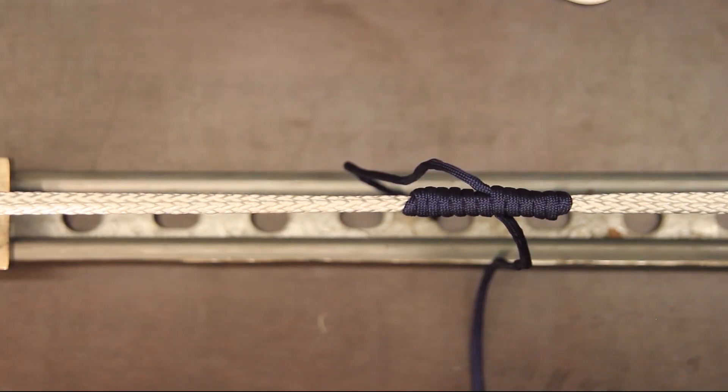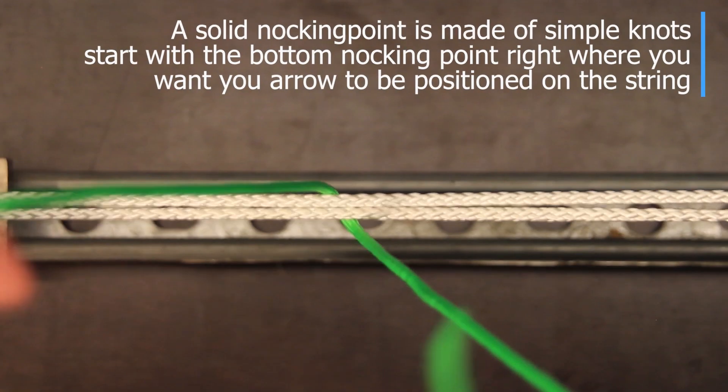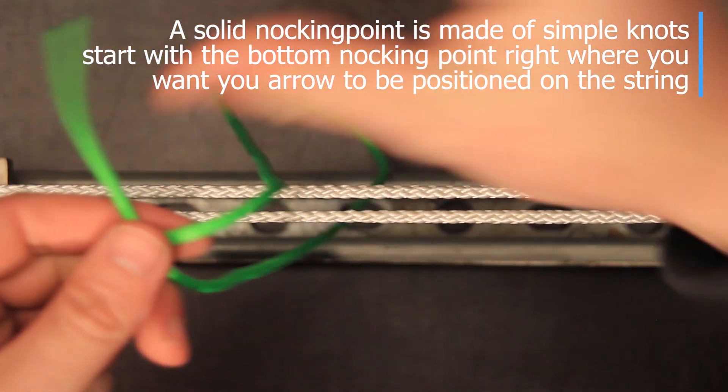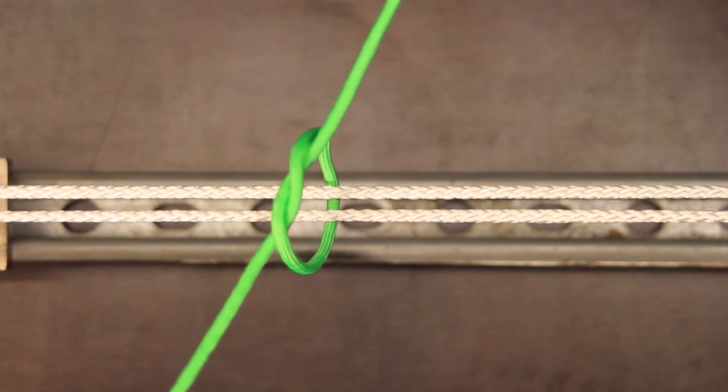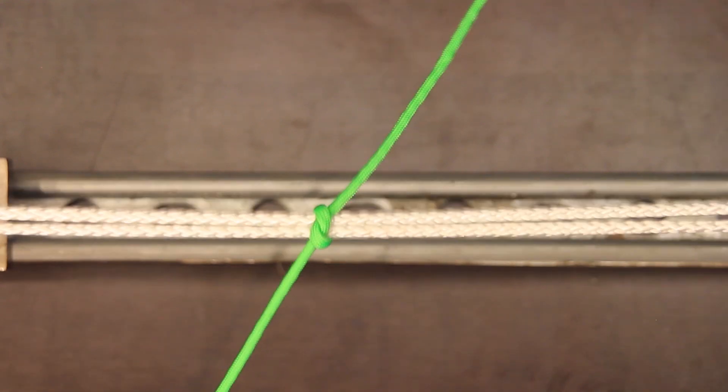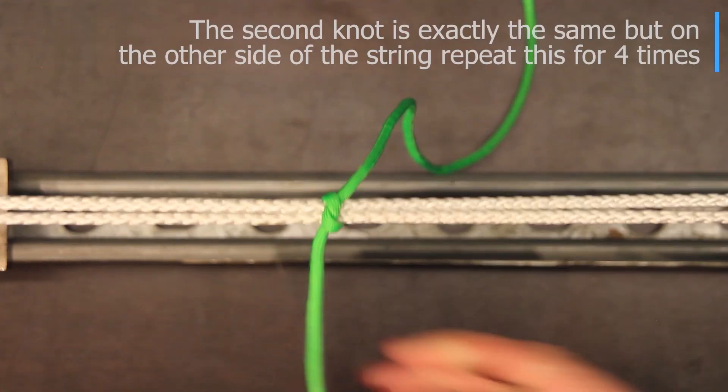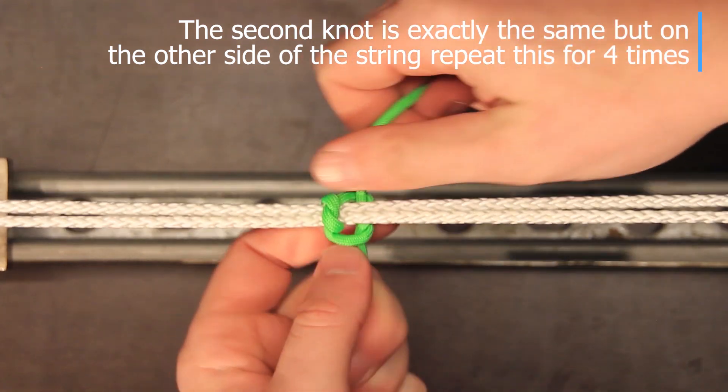So number four is the knocking point knot which is compared to the others is pretty easy knot. So what we're going to do is just make a simple knot like I do here overhand knot I think is that what they call it and just pull it tight but not too tight you want to have it in the exact location where you want it for your arrow rest.